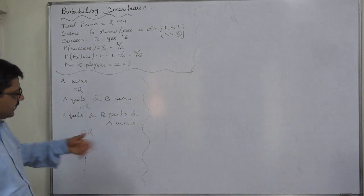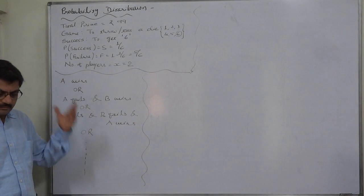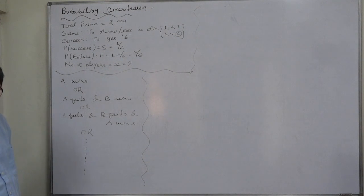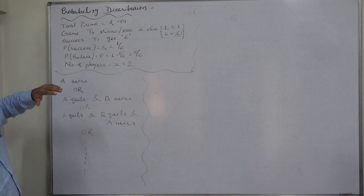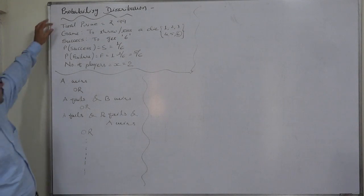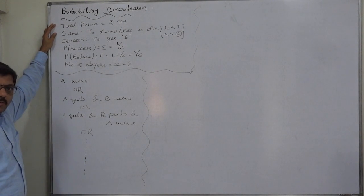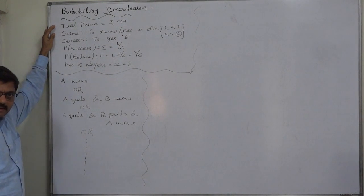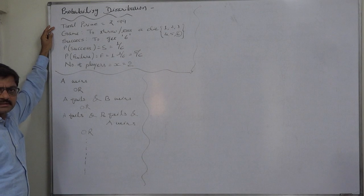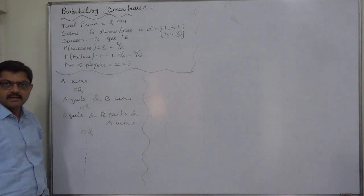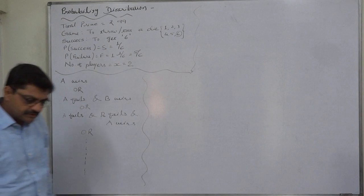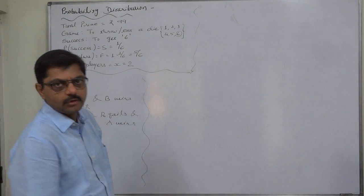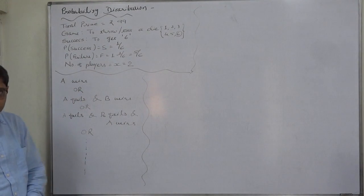We have already discussed these kind of problems when we were discussing the higher level problems of probability. This is the case with total prize money. What prize money can expect A if A starts the game and B? That is nothing but total prize money multiplied by the respective probability. So first we have to find out the probability of A winning the game and B winning the game.